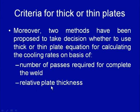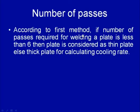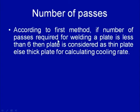There is no clear-cut demarcating thickness limit to define a plate as thick or thin. Therefore, two criteria are used for classification. The first is based on the number of passes required for completing a weld joint: if the number of passes required is less than 6, the plate is considered a thick plate for calculation of cooling rates.